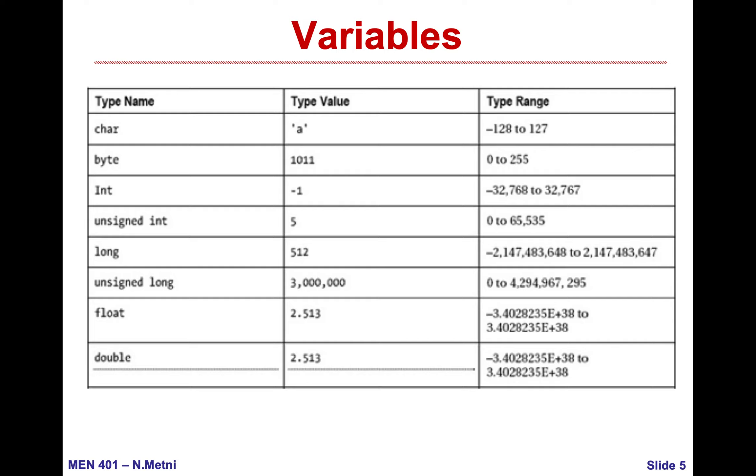Not every variable I am creating should go to billions. I know that this variable can go to thousands maybe, so no need to put another character. First we have the character, which is a b c d, with a range of minus 128 to 127.